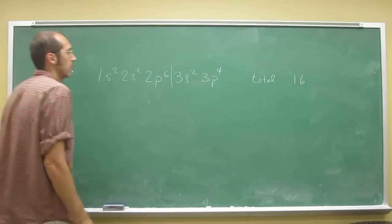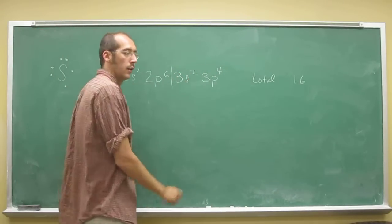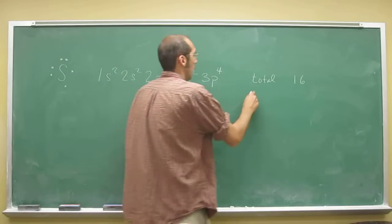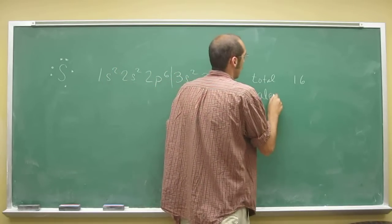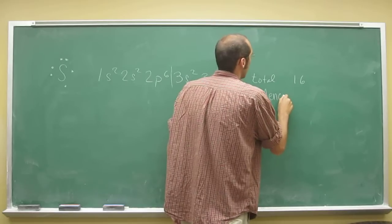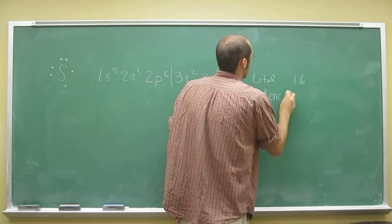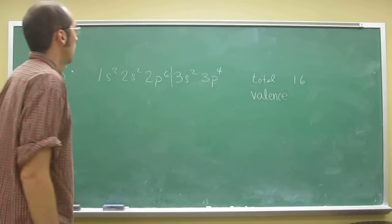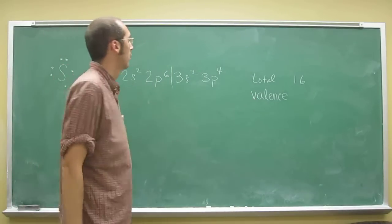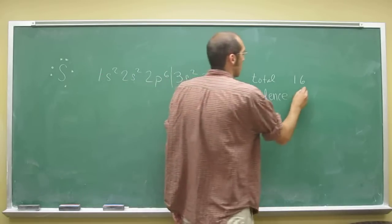The valence electrons, just the ones on the last energy level, right? Yeah, so 6 of them.